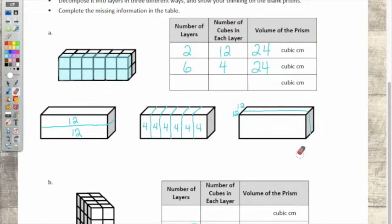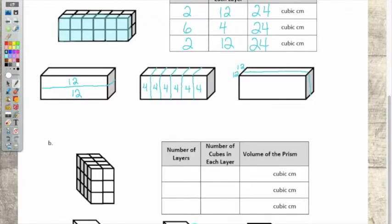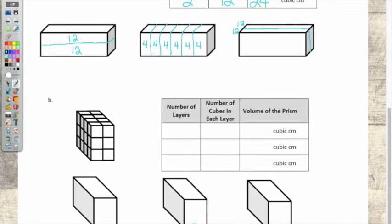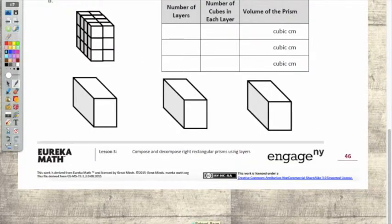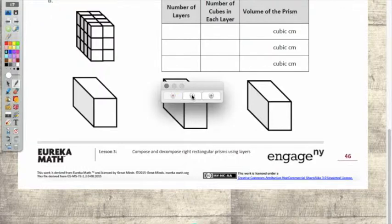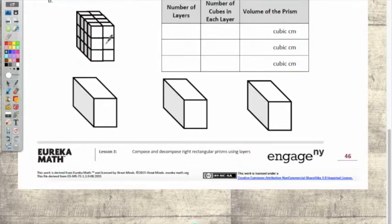This is two layers of 12 again, but it's not the same as the first two layers of 12. So let's take a look at the next one. How are you doing?